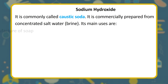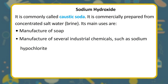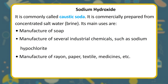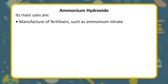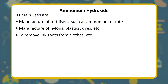Sodium hydroxide (caustic soda) is commercially prepared from concentrated salt water (brine). Its main uses are: manufacture of soap; manufacture of industrial chemicals such as sodium hypochlorite; manufacture of rayon, paper, textiles, and medicines. Ammonium hydroxide is used in manufacture of fertilizers such as ammonium nitrate; manufacture of nylons, plastics, and dyes; and for removing spots from clothes.